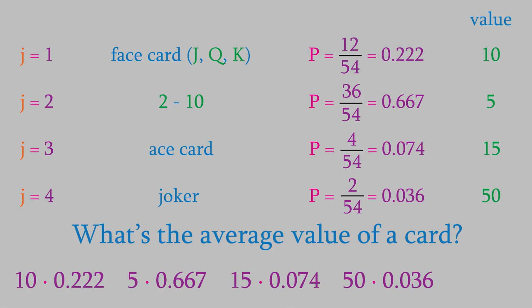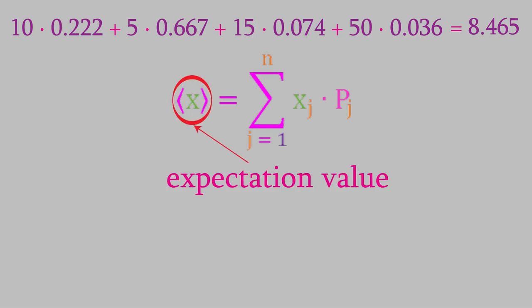By multiplying each value by its probability, we weight the values so that more probable ones count more than less probable ones. Now if we add each weighted value together, we get the average value of a randomly selected card, which turns out to be 8.465. So, what did we do here? We multiplied each value by its probability and took the sum of these over all the groups. The result of this calculation is the average value of x. We symbolize that this way, using angle brackets. This is also called the expectation value of x, and that's the term we'll use in this class, instead of calling it an average.